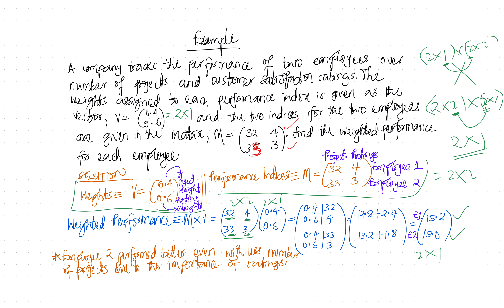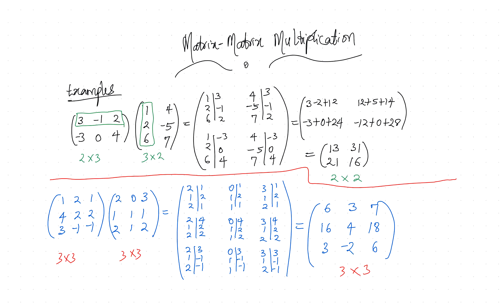Now let's move to matrix-matrix multiplication. The idea is basically the same. We have the matrix [3, -1, 2; -3, 0, 4] — two rows and three columns — multiplied by [1, 4; 2, -5; 6, 7] — three rows and two columns. This is possible because the number of columns in the first equals the number of rows in the second (both three). Taking those out, the result will be a 2×2 matrix.